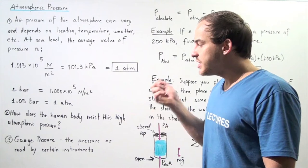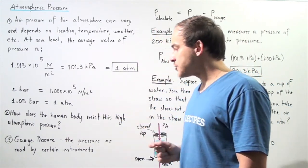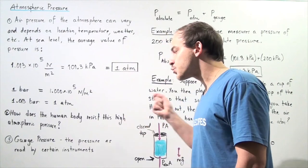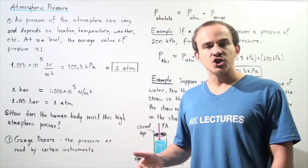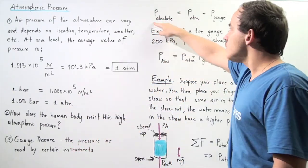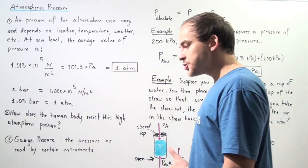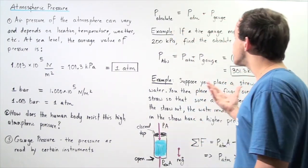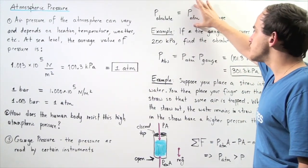Let's go into gauge pressure and absolute pressure. Gauge pressure is simply the pressure as read by a certain instrument, for example, a tire gauge, which reads the pressure found solely in that tire. There's also something known as absolute pressure. The absolute pressure of anything is simply the sum of the gauge pressure and the atmospheric pressure.